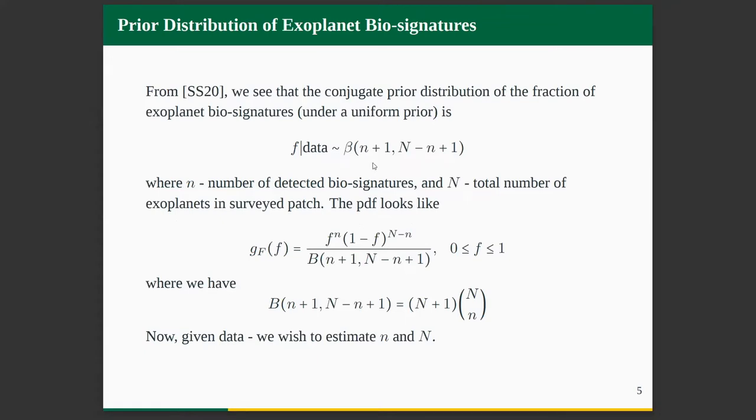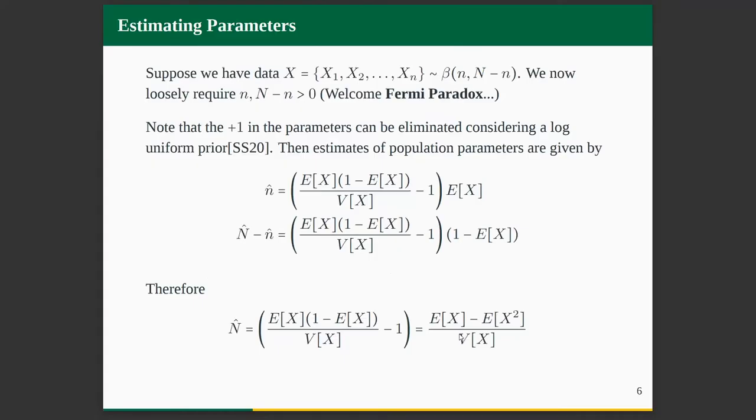This is my conjugate prior, and the posterior is a binomial distribution. After we get the conjugate prior distribution, we can infer from that. That's a very well-known thing in statistics that the conjugate prior of a binomial is a beta distribution, with some parameters n plus one and capital N minus small n plus one. What are these exactly? These do have a meaning. Small n means the number of detected biosignatures in the population, and capital N means the total number of exoplanets in the patch of the night sky that we're surveying. Like all probability distributions, this is a density function. This beta function is basically like a binomial coefficient. It's more or less like a binomial, it's just not directly like a binomial distribution.